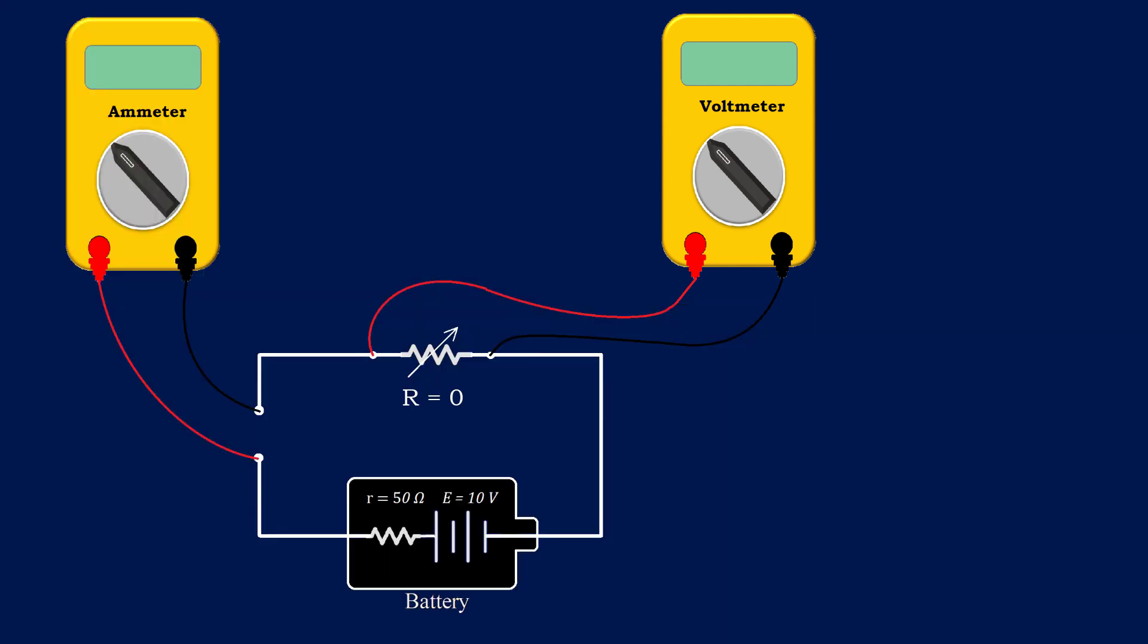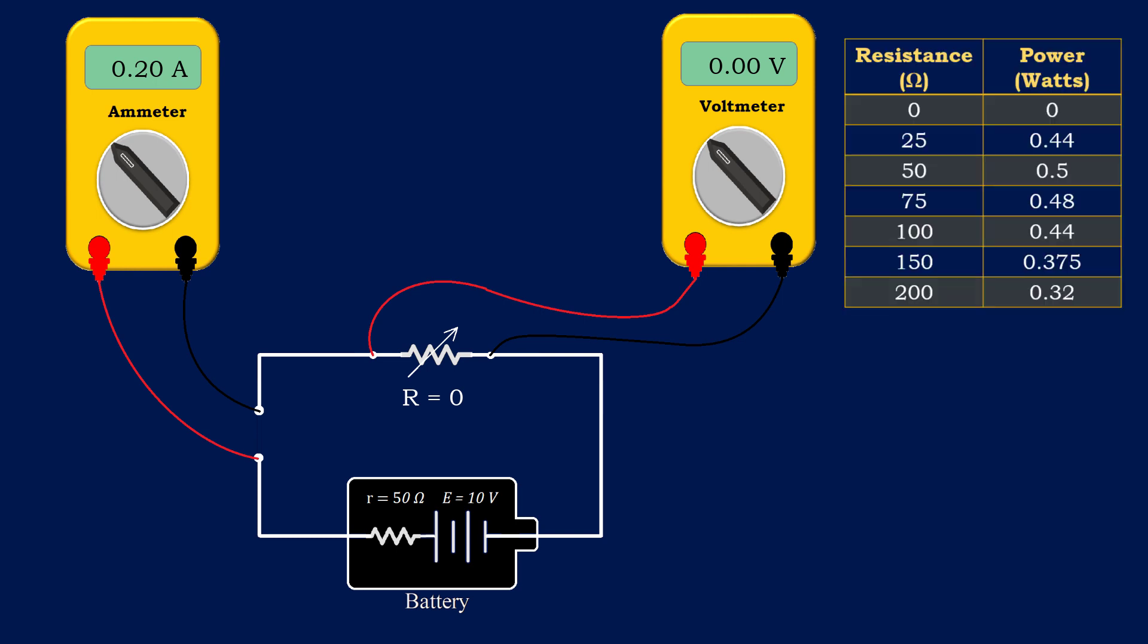Consider the first case. When the resistance of the variable resistor is 0 ohms, the reading of the voltmeter is 0 volts and the reading of the ammeter is 0.2 amperes. As power is the product of current and voltage, the power dissipated across the resistor would be 0.